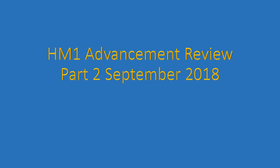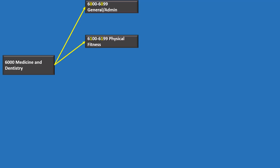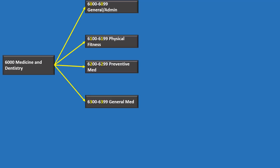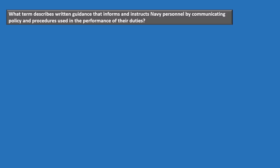This is part 2 of the HM1 advancement review for the September 2018 exam. SSIC code 6000 is medicine. Within 6000, we have 6100 physical fitness, 6200 preventative medicine, 6300 general medicine, 6400-6500 special fields, 6600 dentistry, and 6700-6800 equipment and supplies.